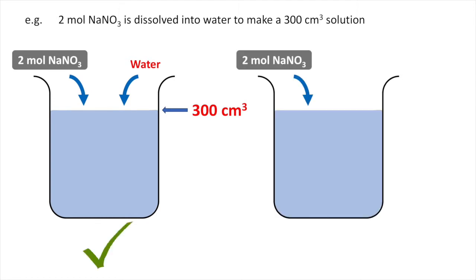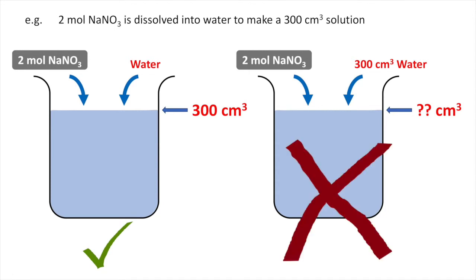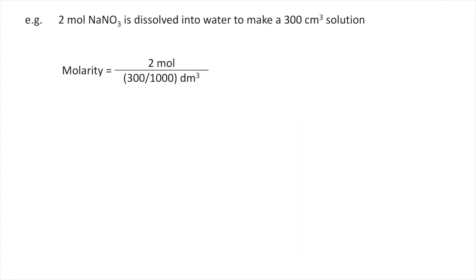Some of you may misunderstand the question. They think that 2 moles sodium nitrate dissolved in 300 cm cubed of water. This is wrong. Because finally, we have no idea what will be the final volume of the solution. So, back to our discussion. The molarity equals to mole divided by volume in dm cubed. And we get the answer.